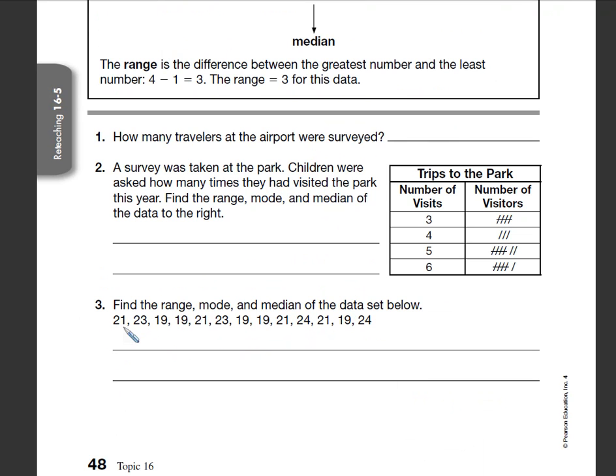So if I have a set of numbers, like we'll look at number 3 here. We have a whole set of numbers. Okay, the first thing that you have to do to figure out range, mode, and median is you have to put those numbers in order. So go ahead and take a minute and do that. So I had a 19, I had another 19, I had another 19, I have another 19, and then here's my last 19.